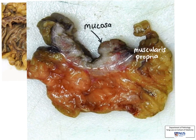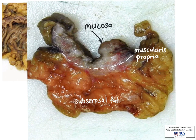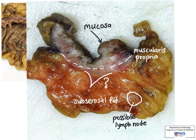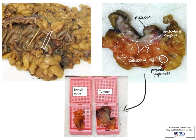The muscularis propria, denoted by the dotted line, the subcerosal fat, and a pale circular structure that looks like a lymph node. There is also a hardened and whitish area dipping into the subcerosal fat, and this could be malignant tissue or an area of fibrosis. We sent this slice together with the pericholic lymph nodes located in the subcerosal fat for further processing to further evaluate the specimen microscopically.